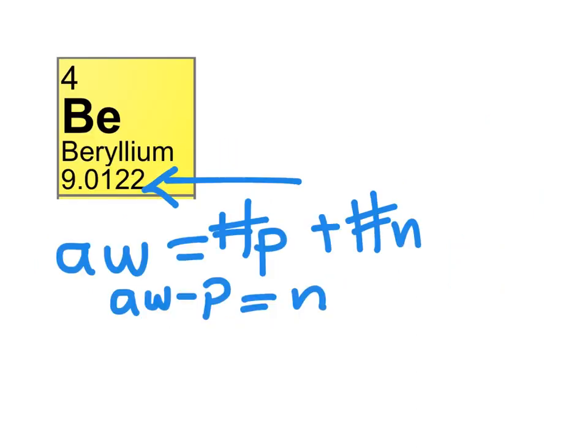So for beryllium, we take our rounded 9, subtract 4, and we get 5 neutrons.